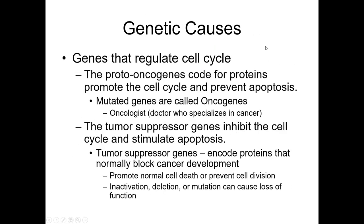The last questions will be on the genetic causes of cancer. You need to understand that these are groups of genes. Proto-oncogenes are groups of genes that collectively promote the cell cycle and prevent apoptosis, while tumor suppressor genes are groups of genes that inhibit the cell cycle and stimulate apoptosis. When you mutate proto-oncogenes, they become oncogenes. When you mutate tumor suppressor genes, we call them mutated tumor suppressor genes.